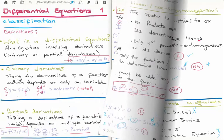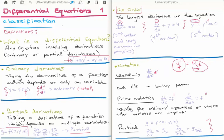Going back to our original equation: it is a second-order equation, it is linear because there are no powers of the function y, it has constant coefficients A and B, and it is homogeneous. So the complete classification is: a second-order linear differential equation with constant coefficients, and it's homogeneous. You might get lost with all these different terms at first, but after a while you just get used to it.